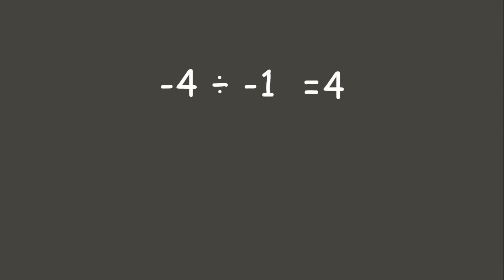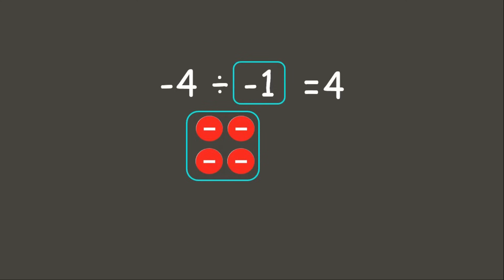Let us check our answer using our counters. Our dividend is negative 4, so let us put 4 negatives. We divide this into one group. Since our divisor is a negative integer, we need to flip our counters and get its opposite, which gives us positives. Therefore our answer is positive 4.